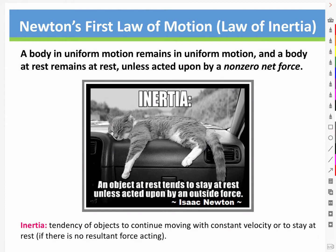Recall what we mean by uniform motion — that is constant velocity, zero or otherwise. Inertia refers to the tendency of objects to continue moving with constant velocity, or to stay at rest if there's no resultant force acting upon it.